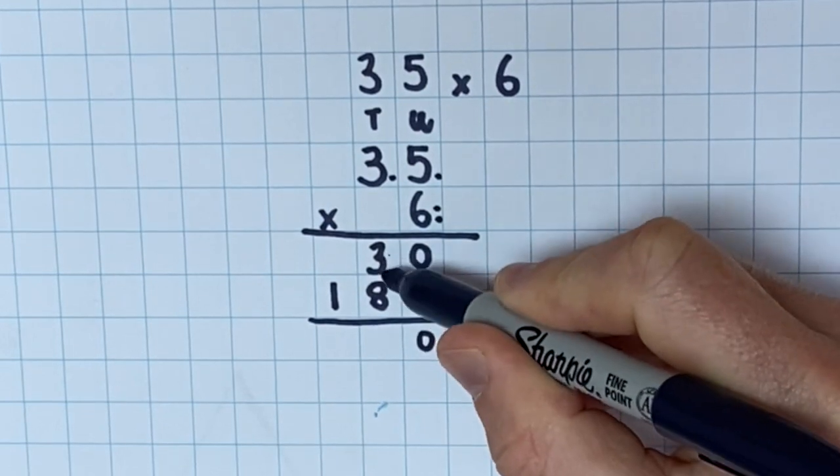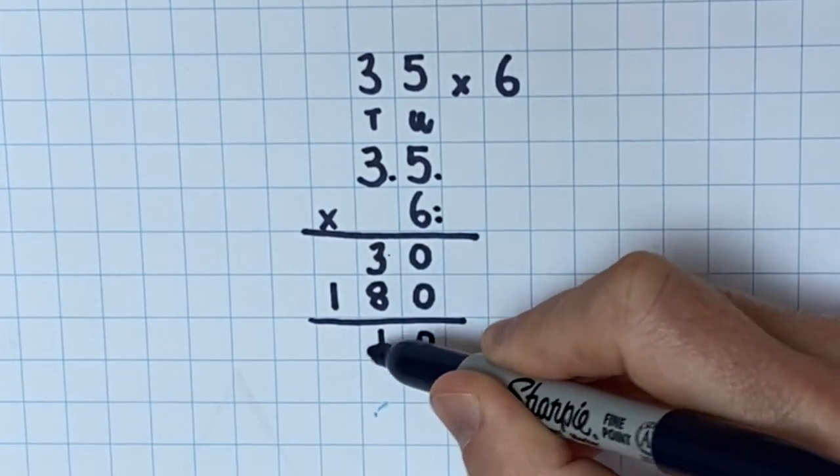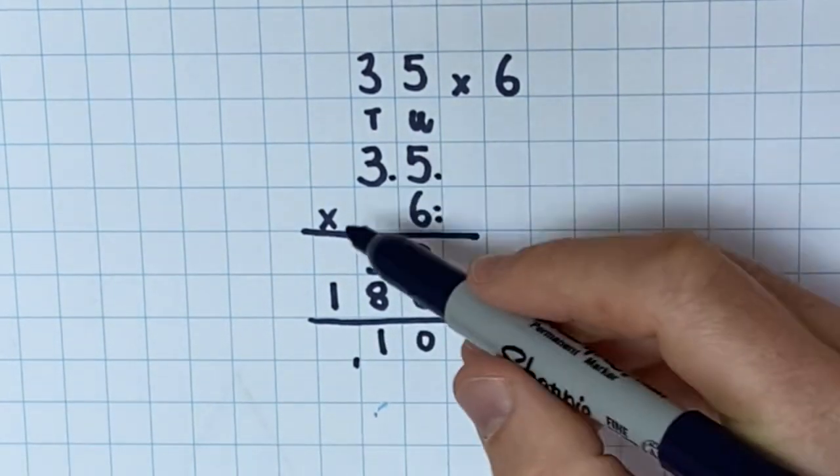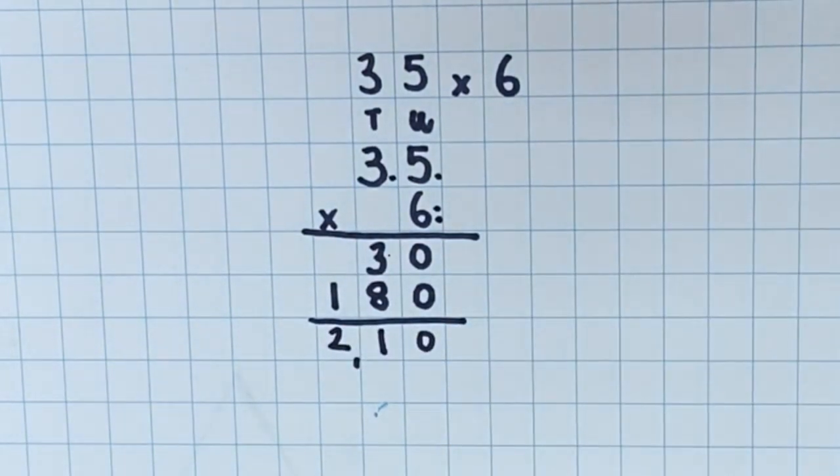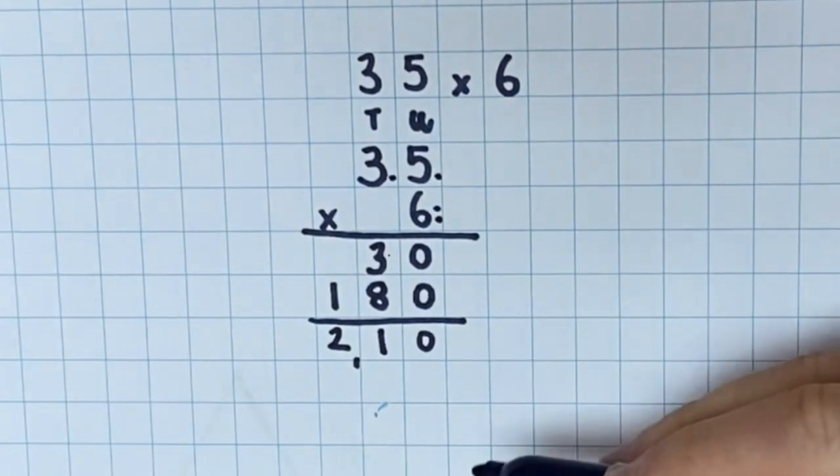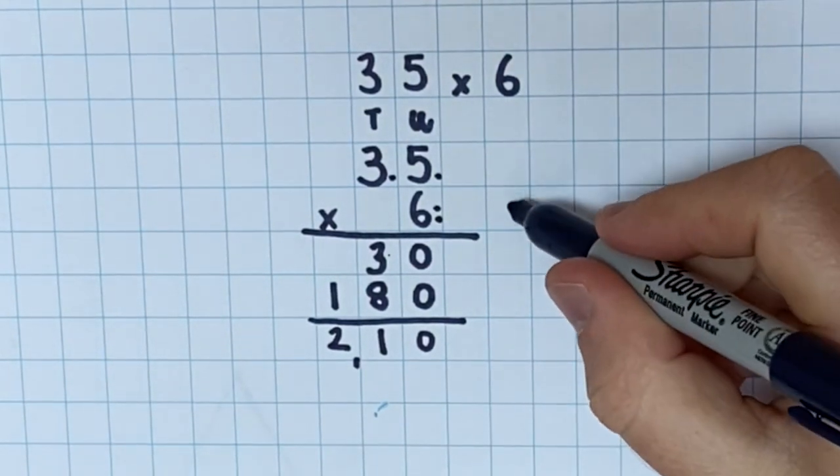So once I've multiplied those numbers together, now I just need to add 30 and 180 together. So 0 add 0 is 0. 3 add 8 is 11. So I need to carry 1. And then 1 add the carried 1 is 210. So that there is the easier way.